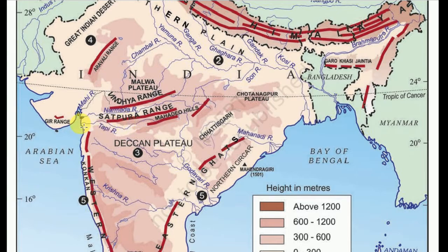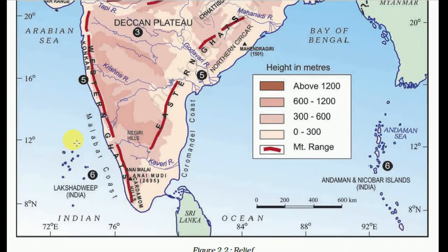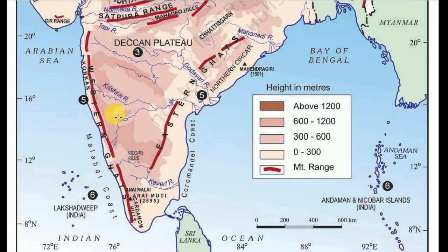Other rivers such as the Mahanadi, Godavari, Kaveri, and Krishna also flow through these regions.